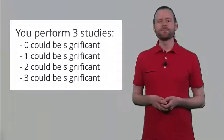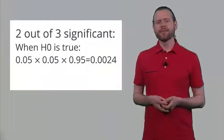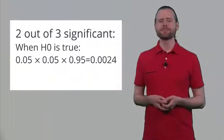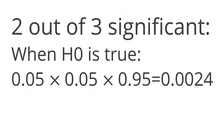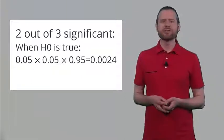Let's say we perform three studies in a row. The possible outcomes are 0, 1, 2, or 3 significant results. Let's calculate the likelihood of finding 2 out of 3 significant results. When the null hypothesis is true, the probability is alpha × alpha × (1 − alpha) = 0.05 × 0.05 × 0.95, which gives 0.0024.